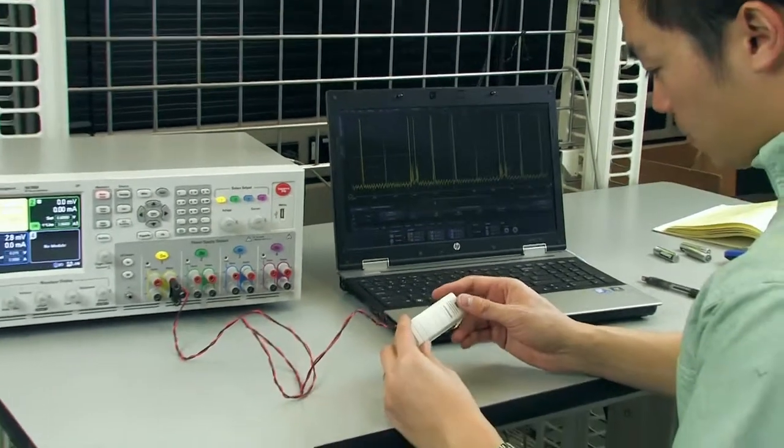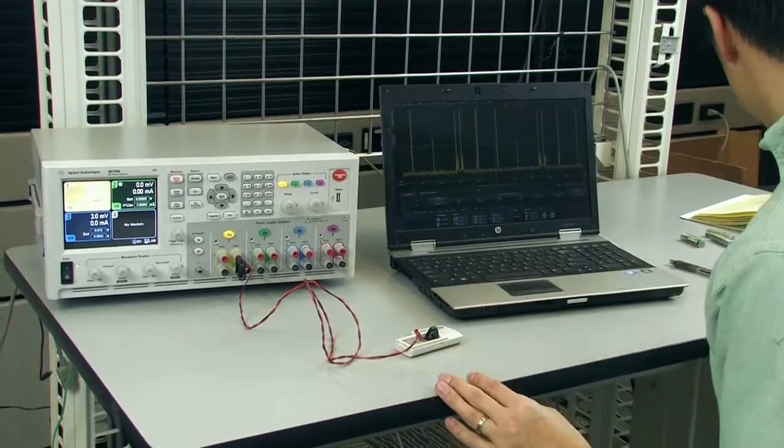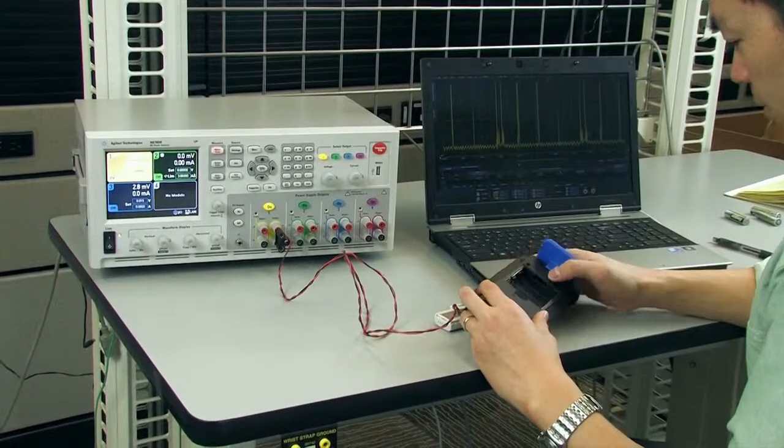The Agilent N6781A provides unmatched accuracy because it has high speed seamless auto ranging, resulting in a wide dynamic measurement range from nanoamps to amps.